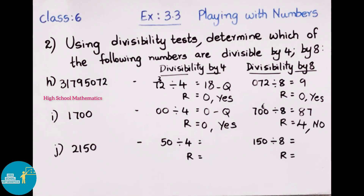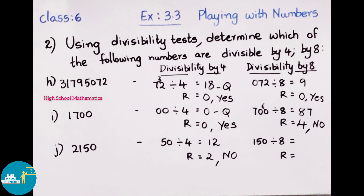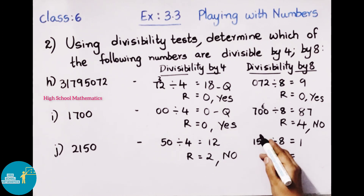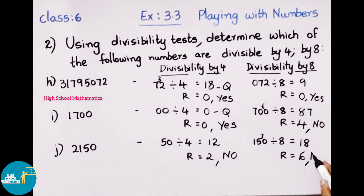Next number: 2,150. Checking divisibility by 4: last 2 digits are 50. 4 times 12 is 48; 50 minus 48 gives remainder 2. So 2,150 is not divisible by 4. Checking divisibility by 8: last 3 digits are 150. 8 times 8 is 64; after steps, remainder is 6. So 2,150 is not divisible by 8.